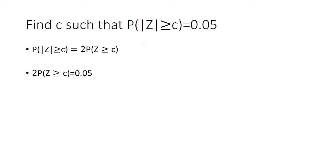This equals 0.05 from the given. Dividing both sides by 2, we get P(Z ≥ c) equals 0.025.